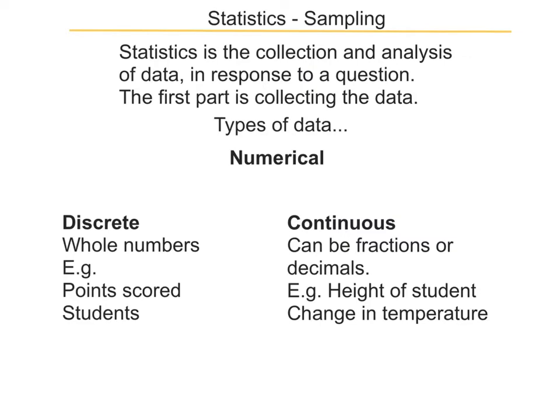Continuous data, on the other hand, can have in-between values. For example, if I'm looking at the height of a student, I could measure a student as being 164 centimetres or 165 centimetres, but also 164.5 or 164.75 — all sorts of fractions in between are possible. The same with change in temperature: a change in temperature could be 3.1 degrees, 3.6 degrees, 3.5 degrees, etc. They can have all the values in between; they're not fixed to certain values.